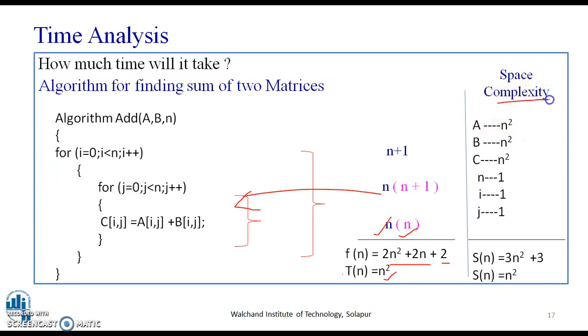We will understand and see the space complexity for the same program. As we can see here, the variables that have been used are A, B, and C. The space is here required for A, that is N square, B, N square, and C, N square. And for N it is 1, I it is 1, and for J it is 1. On adding all variables, we get S of N is equal to 3N square plus 3. Reducing it, we have S of N is equal to N square.